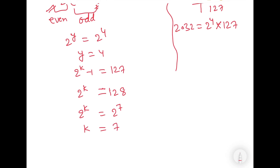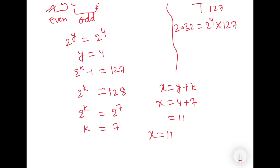Since we assumed x is equal to y plus k, the value of x will be equal to 4 plus 7, that is equal to 11. Hence, the answer is x is equal to 11 and y is equal to 4.